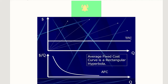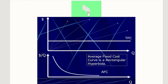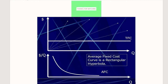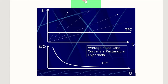Another example is the average fixed cost curve, which also forms a rectangular hyperbola. On the x-axis we have output, and total fixed cost is fixed — for example at 100. As we divide this constant by increasing levels of output, starting from 1, then 2, then 3, the average fixed cost declines further and further, getting closer and closer to the x-axis as output increases.